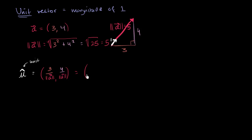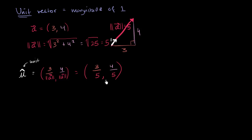The magnitude we already figured out is 5, so the unit vector is going to be 3 fifths in the horizontal direction and 4 fifths in the vertical direction. You can verify this: the ratio between these two numbers is the exact same as the ratio in the original vector, so we're going in the same direction, but the magnitude is now going to be equal to 1.